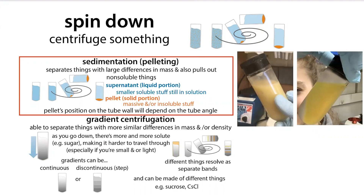Spin down just means to centrifuge something. More specifically, it's typically referring to sedimentation. Basically, you stick the sample in a machine and it spins really fast. What happens is that the big heavy stuff gets pulled out — it gets pelleted into a solid clump, with the liquid, the supernatant, still above it. This is an example of sedimentation.